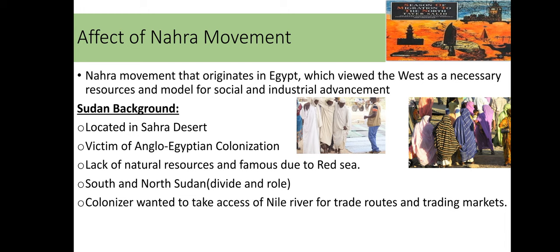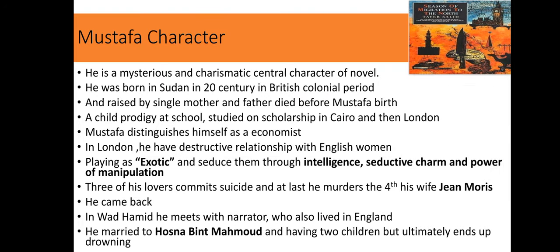Second, the background of Sudan: it is located in the Sahara Desert, was a victim of Anglo-Egyptian colonization, and lacks natural resources like water and plantations. Before colonization, Sudan had two important parts — South and North Sudan. Colonizers, both Egypt and Britain, used the tool of divide and rule, dividing Sudan into two parts to take over the Nile River routes and trade markets for their own progress and development.